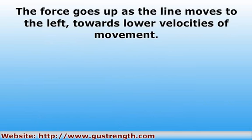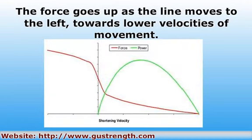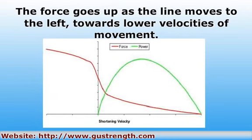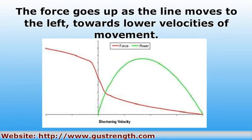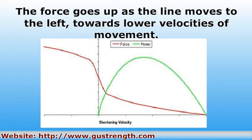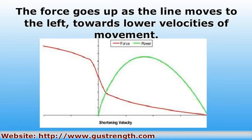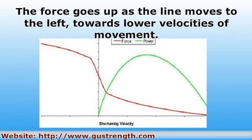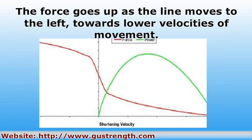As the axis moves to the left, you can see that the red force line goes up. As the movement slows down, the force output goes up. The spot where the bottom axis reaches the vertical or force axis is zero velocity. This corresponds with an abrupt rise in force — this would be an isometric action against a presumably immovable object. The muscle can produce its maximum force, but no actual work is being performed. Near maximum strength movements take place to the right of this big rise in force, where the velocity is very slow, but not nil.